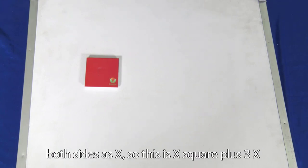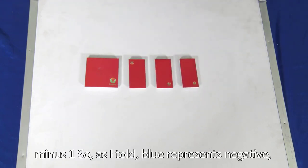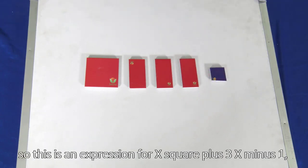As I told you earlier, I am representing this square with both sides as x, so this is x square plus 3x. So plus 3x minus 1. As I told, blue represents negative. So this is an expression for x square plus 3x minus 1.